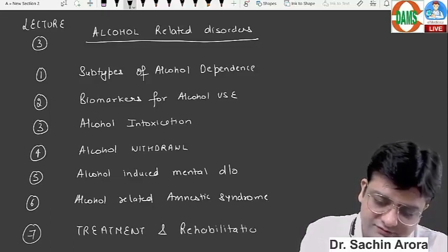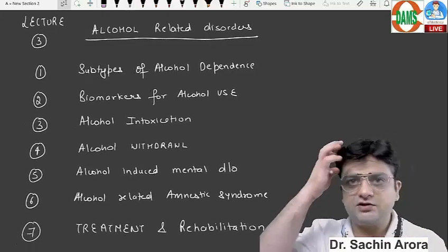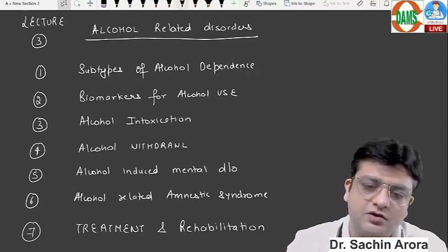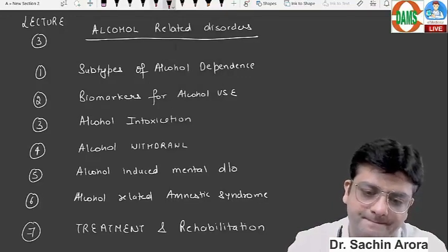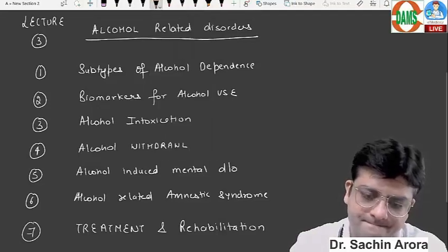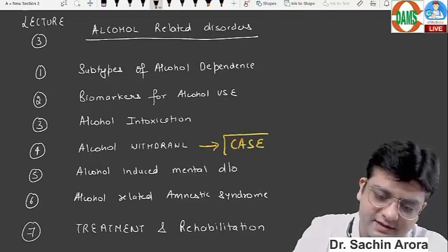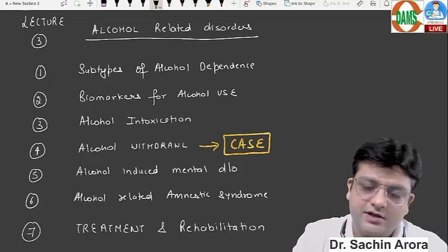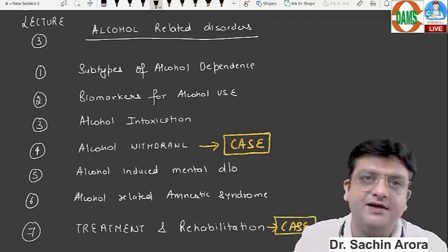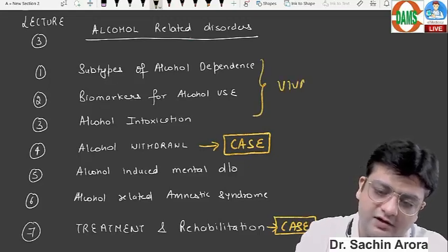Treatment and rehabilitation are also on the agenda. This chapter has less theory questions and more viva and practical-based questions. For example, alcohol withdrawal may be asked as a case in your exam, and in that case your viva will be asked on treatment and rehabilitation. These are only viva questions.